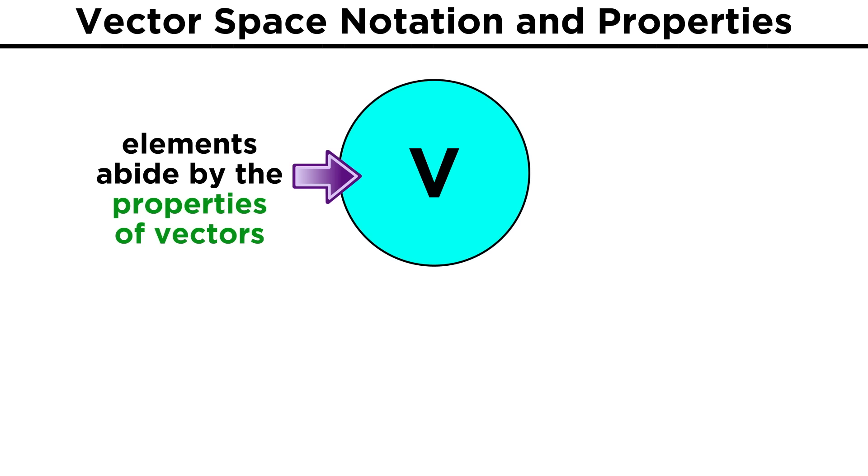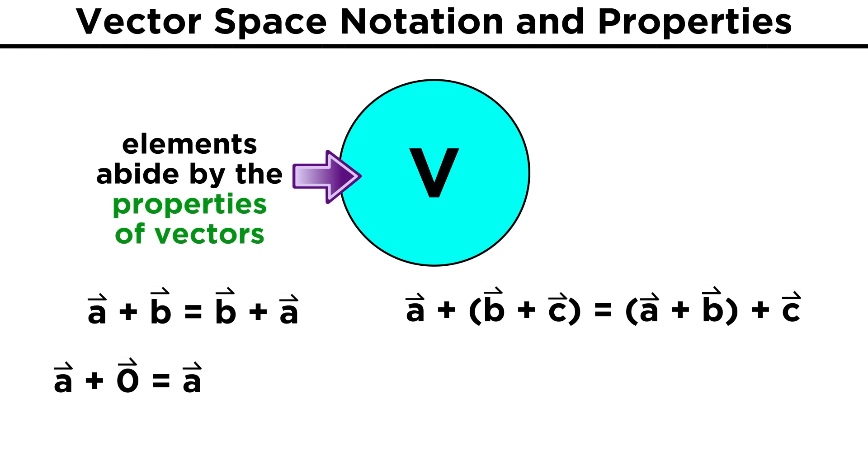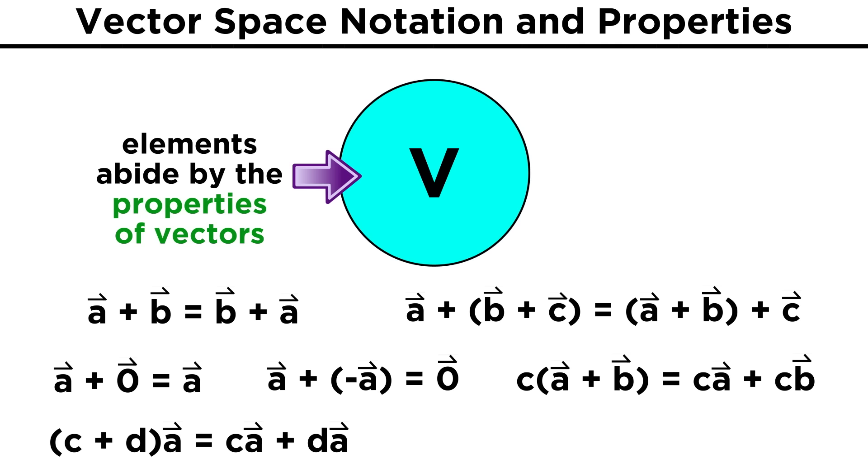All elements of the vector space have the same properties we already discussed for vectors, so elements must abide by the commutative and associative properties of addition. There also exists a zero vector in the vector space, such that any element plus the zero vector will just give back the element. For each element a, there exists another element, negative a, within V, such that the addition of the two gives the zero vector. Scalars can be distributed across the addition of two members of V, just as an element can be distributed across the addition of two scalars. The product of two scalars multiplied by an element is the same as one of the scalars times the product of the other scalar and the element. And finally, multiplying by the scalar one just gives back that element.